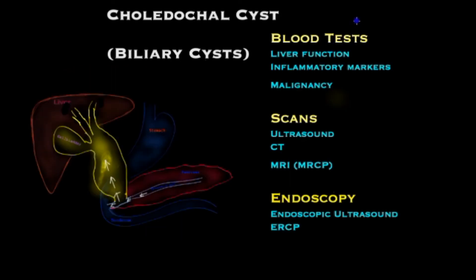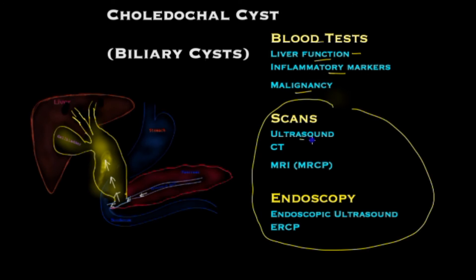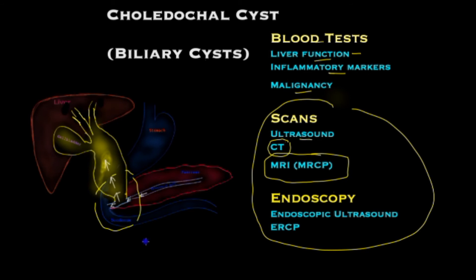The following investigations are commonly performed when assessing biliary cysts. Blood tests including liver function tests often show derangement. If there is infection, inflammatory markers may be elevated, and if frank cancer is present, some cancer markers are raised. The mainstay of assessment is scans and endoscopy. An ultrasound is the first preliminary investigation, particularly useful in infants and children. A CT scan is indicative of the diagnosis, but the MRI scan — specifically the MRCP — demonstrates the cyst and reliably shows the abnormal junction, which is a high-risk attribute for development of cancer.